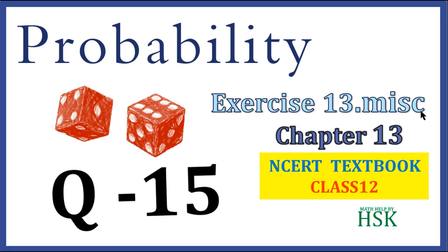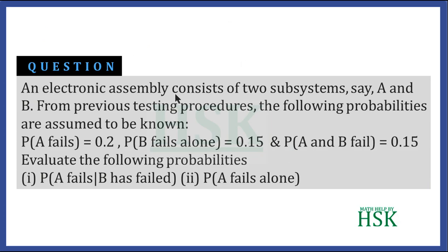This is question number 15 of miscellaneous excise of chapter 13, Probability. The question is: an electronic assembly consists of two subsystems A and B. From previous testing, the following probabilities are known: probability that A fails is 0.2, probability that B fails alone is 0.15, and probability that both A and B fail is 0.15.